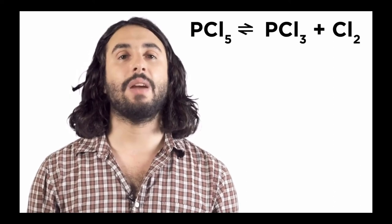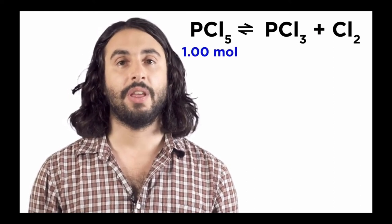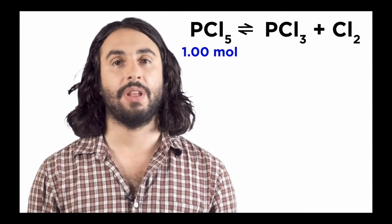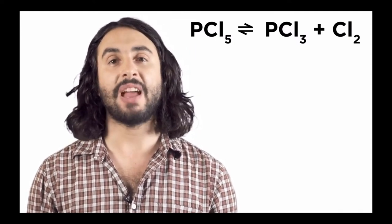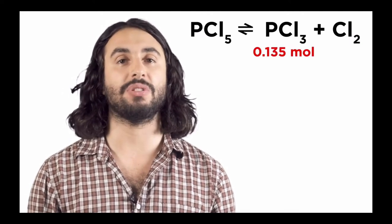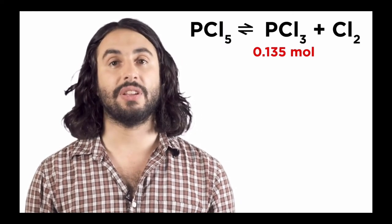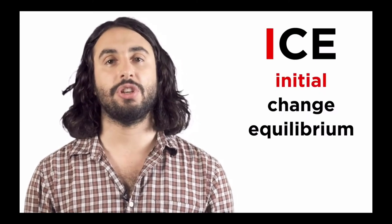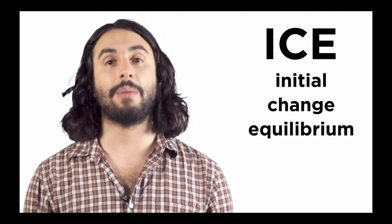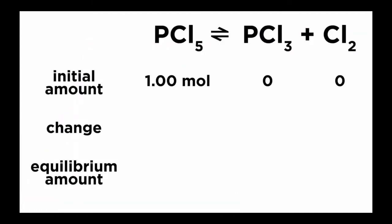For example, let's look at this equilibrium. Let's say we start with one mole of PCl5, allow the system to reach equilibrium, and then once at equilibrium we measure that there are 0.135 moles of PCl3. So how much of the other two things are there? To answer this, we can make something called an ICE box. These letters stand for initial, change, and equilibrium. We set them up like this. For initial, we put the initial amounts of each thing. We started with just one mole of reactant, so we put one there and zeros for the products since there wasn't any of those at first.